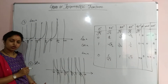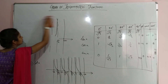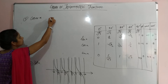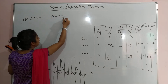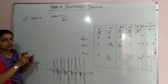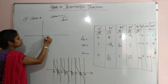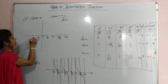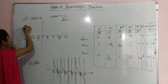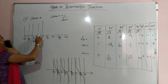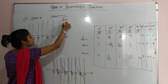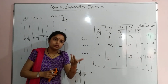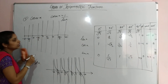Now let me draw the graph of cosec x — the fifth function. Cosec x is the reciprocal of sine x, so take the sine values and reciprocate them. Set up axes: 0, π/2, π, 3π/2, 2π, and their negatives. Draw vertical asymptote lines parallel to the y-axis. At 0, sin is 0, so cosec is 1/0, which is infinity — so at 0 the graph tends to infinity.